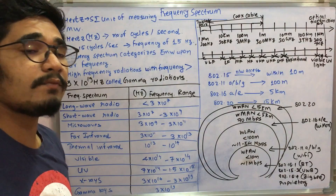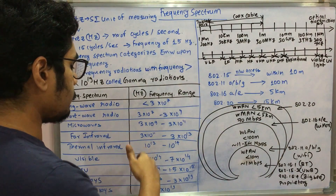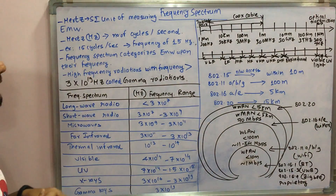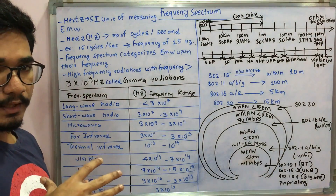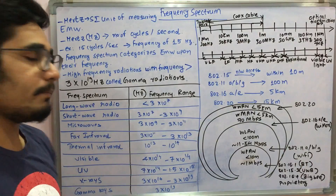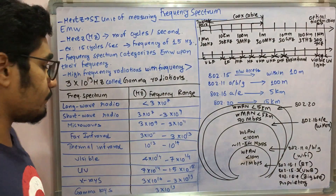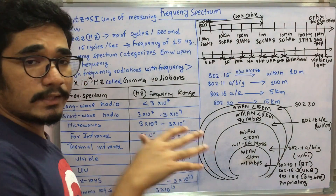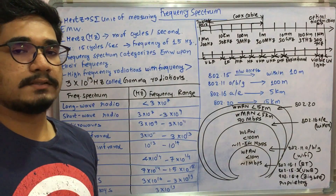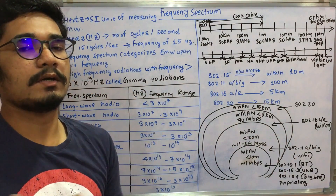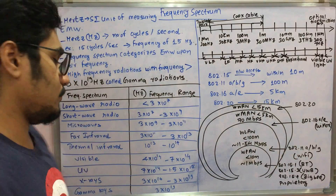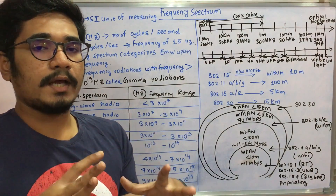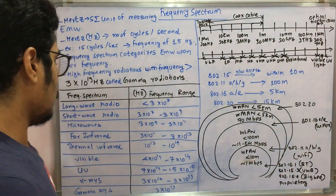Next we have the harmful radiations from the sun called ultraviolet radiations, ranging from 7×10^14 to 1.5×10^15 hertz — because of this high frequency you should wear special equipment if exposed to them. Then we have X-rays ranging from 3×10^16 to 3×10^19 hertz, used for examining bones, the head, and other body parts, with special setups to scan the body.